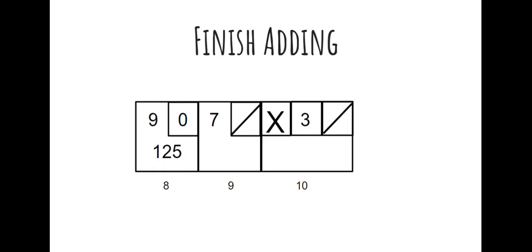Now I go back to my game total of 125 from frame eight and start adding. For my frame nine game total: 125 plus 10 for my spare is 135, plus my next roll which was the strike — worth 10 — gives me 145. For the 10th frame, I add up the total pins knocked down: 10 for the strike plus 10 for the spare equals 20. So 145 plus 20 equals 165 — that's my game ending total.